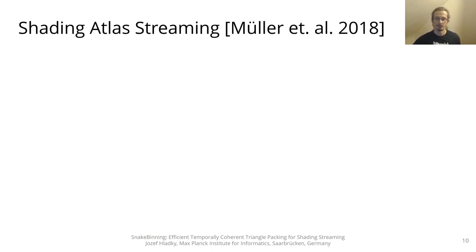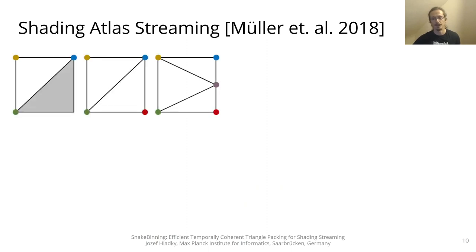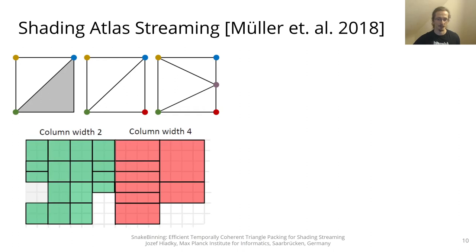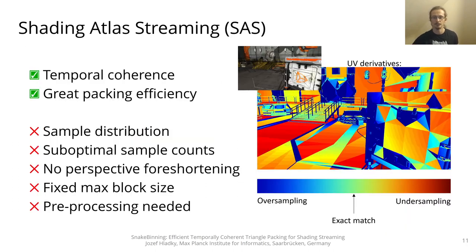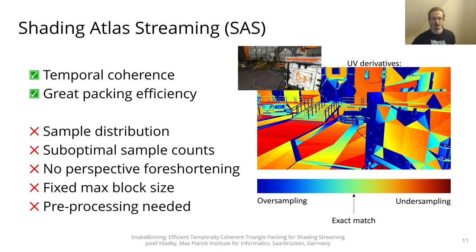Shading atlas streaming was introduced in 2018. This method pre-processes the scene into patches of up to three neighboring triangles and organizes these patches into rectangular blocks. SAS is temporally coherent and achieves great packing efficiency. However, the UV derivatives show that the atlas shading sample distribution is not ideal. Furthermore, SAS doesn't account for perspective foreshortening and suffers from blurry artifacts due to its fixed maximum block size.